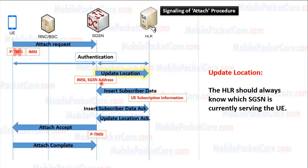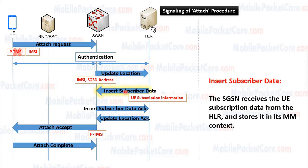In this message, the SGSN sends its own address to the HLR. This is done because the HLR should always know which SGSN is currently serving the UE. Then the HLR returns insert subscriber data to the SGSN. In this message, the HLR sends the subscription information of the UE to the SGSN. The SGSN will store this UE subscription information in its MM context.